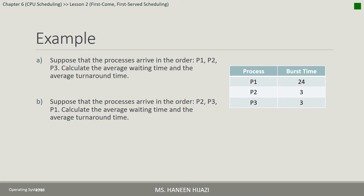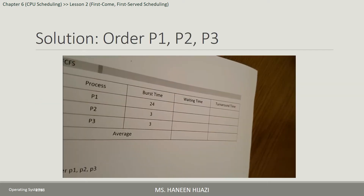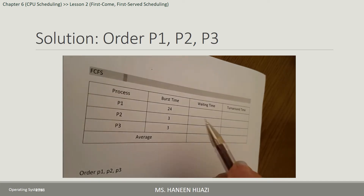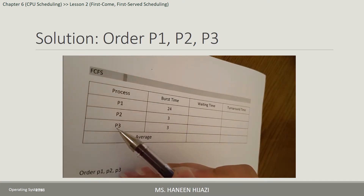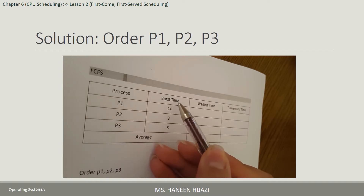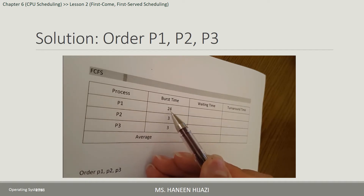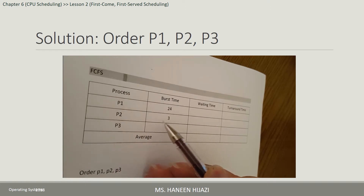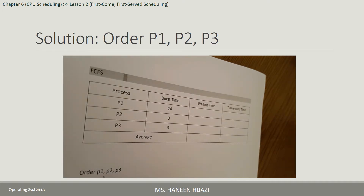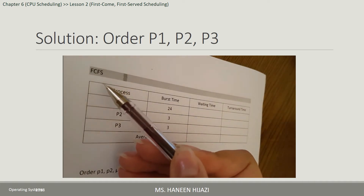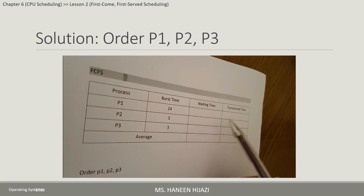بعدين بدنا نحسب الـ Average Waiting Time والـ Average Turn Around Time إذا وصلوا بالـ order: P2، بعدين P1. فرضاً كان في عندنا ثلاث بروسسيز: P1، P2، P3. P1 الـ burst time تبعها كان 24، P2 كان الـ burst time تبعها 3، P3 كان الـ burst time تبعها برضو 3. فرضاً وصلوا بنفس الوقت ولكن في الـ order P1، بعدين P2، بعدين P3.